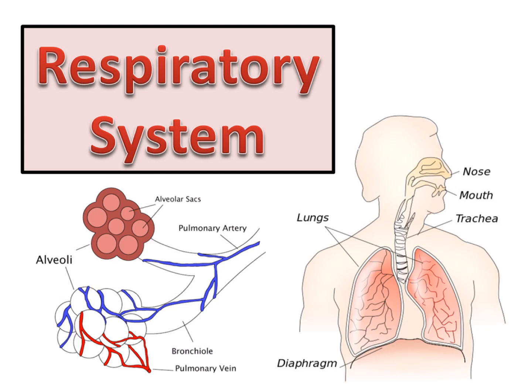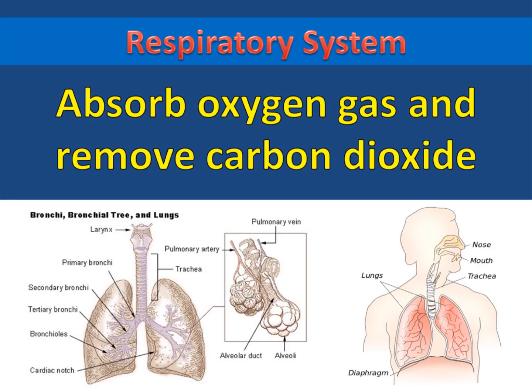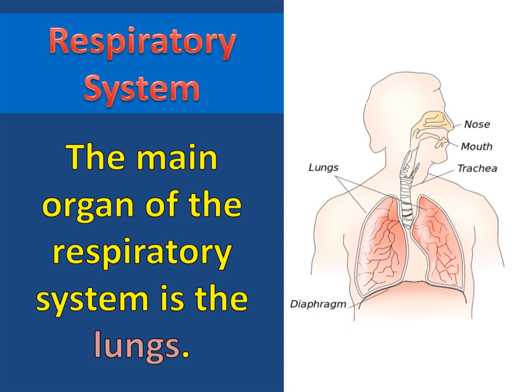The respiratory system. The primary purpose of the respiratory system is to absorb oxygen gas and remove carbon dioxide gas from the animal's body. The main organ of the respiratory system is the lungs.